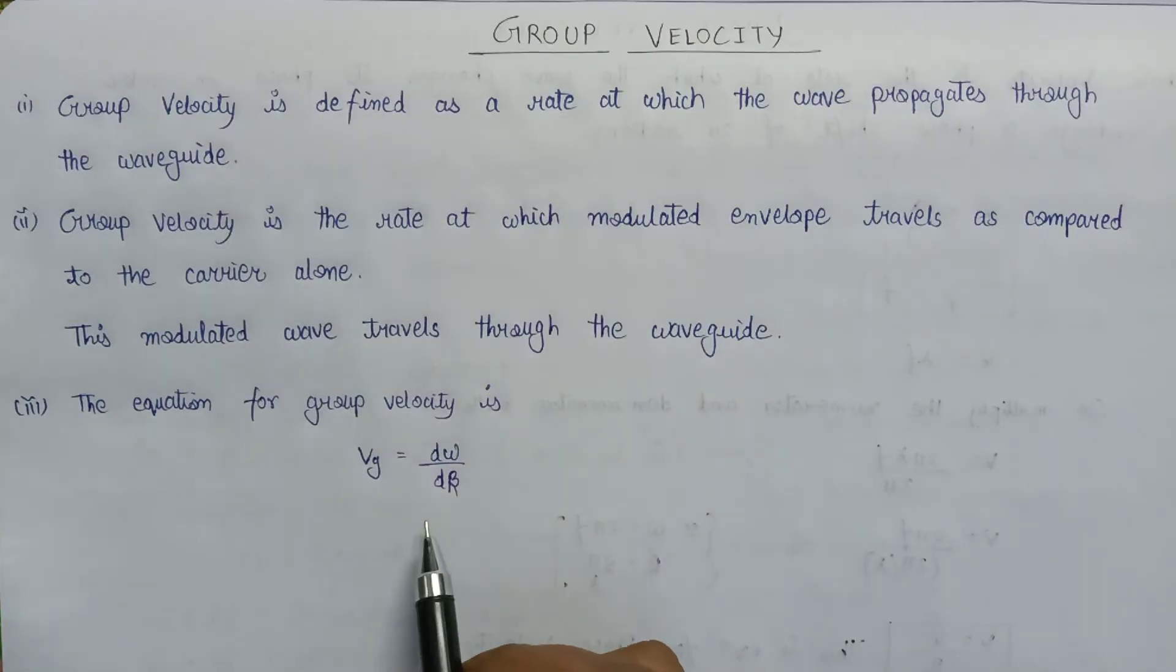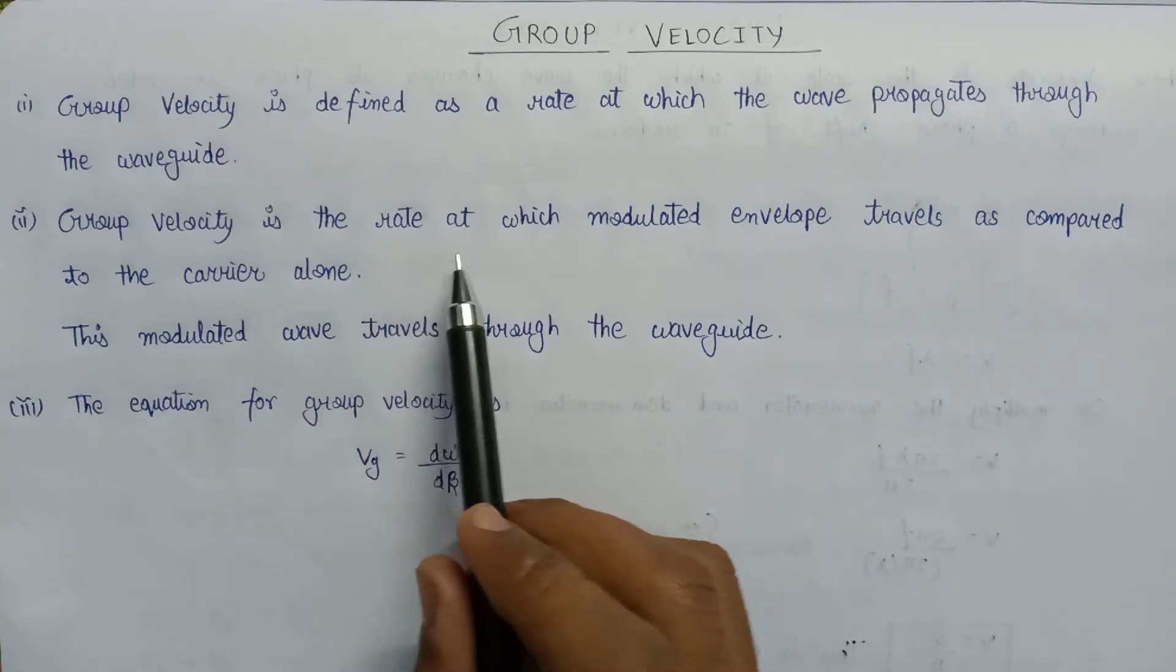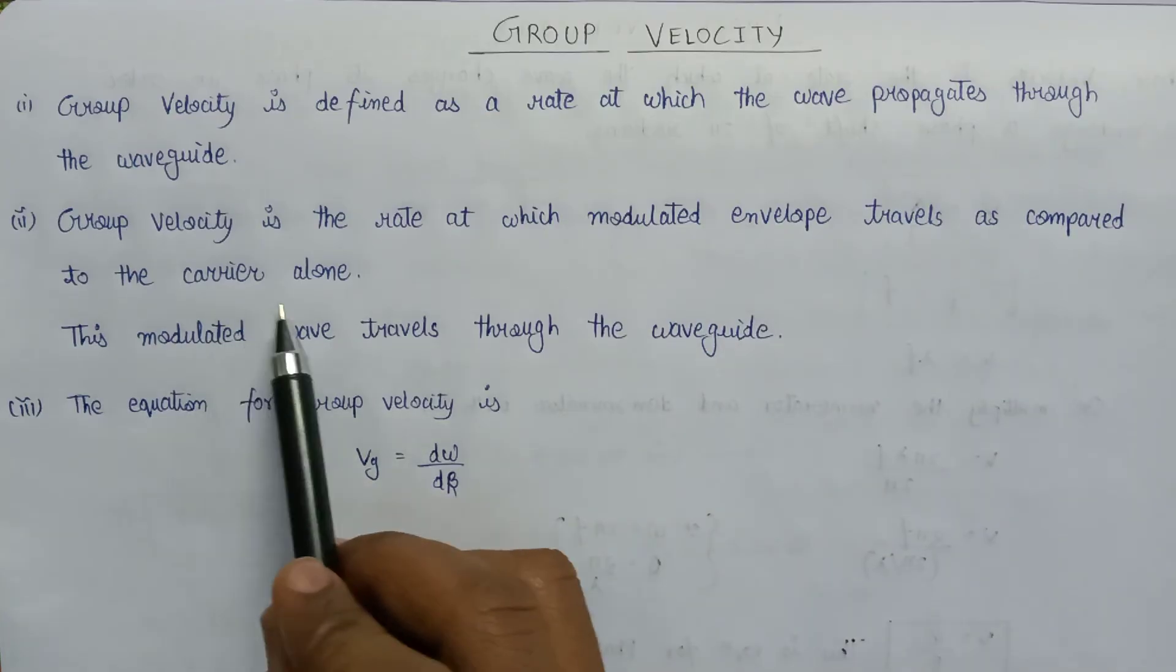This is the representation or equation for group velocity. As we discussed, group velocity is the rate at which the modulated envelope travels as compared to the carrier alone.